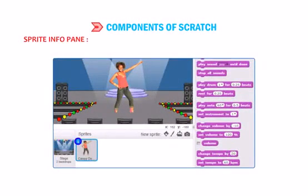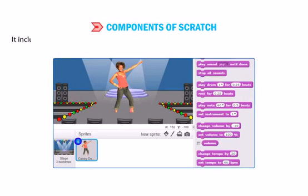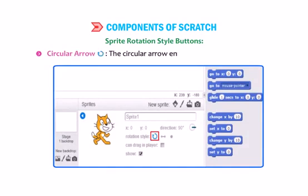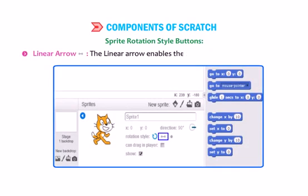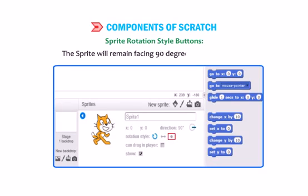Click on the info icon on the top left corner of a sprite thumbnail to display the Sprite Info Pane. It includes information about the selected sprite as well as tools for manipulating it. The tools include Sprite Rotation Style Buttons: the circular arrow enables full rotation of a sprite, the linear arrow enables the sprite to only face left or right, and disable rotation keeps the sprite facing 90 degrees no matter what.